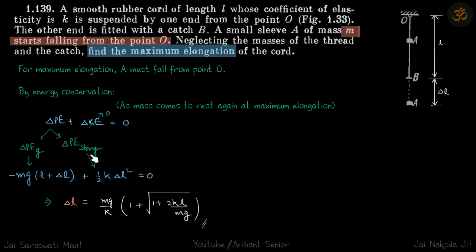It has fallen down, so delta PE is negative in the gravitational field. So it is minus mg into (L plus delta L), and delta PE of the string is positive energy.